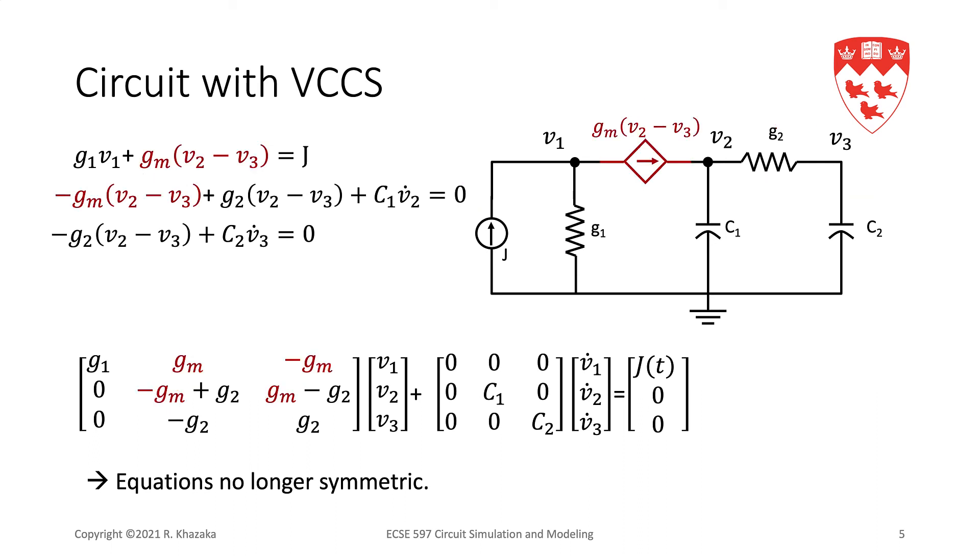So, the stamp for the controlled source would be Gm minus Gm minus Gm Gm in row 1, row 2, column 2, column 3. Row 1, row 2 are the nodes where the current source is connected, and column 2, column 3 are the controlling voltages.